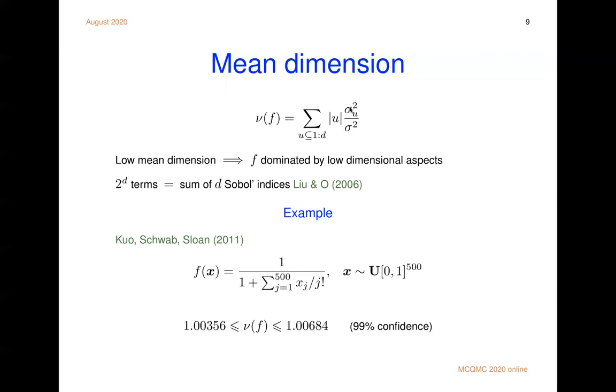Here's an example integrand from the literature in a paper by Kuo, Schwab and Sloan. They looked at this integral or this integrand and a bit of numerical work. You can show that the mean dimension of that thing. Well, it's more than 1.003 and less than 1.007. This is a 95 percent, 99 percent confidence interval.